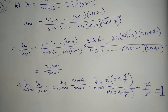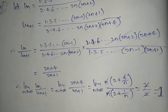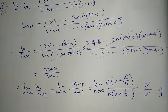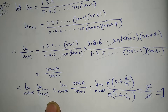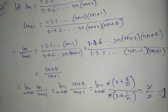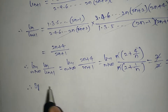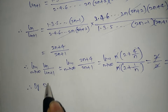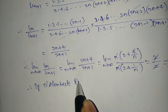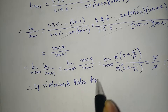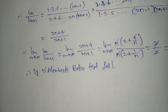Since limit n→∞ of Un/Un+1 equals 1, D'Alembert's ratio test fails. So we apply Raabe's test to this problem.